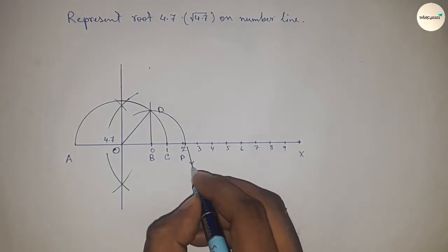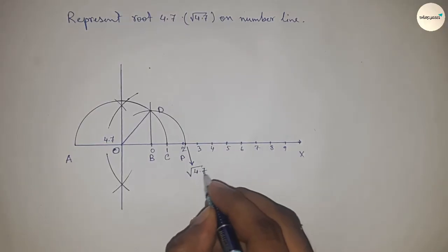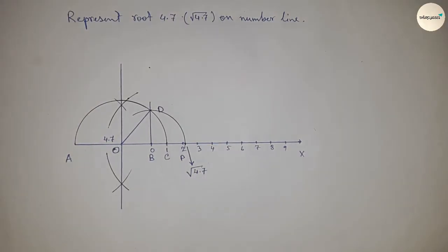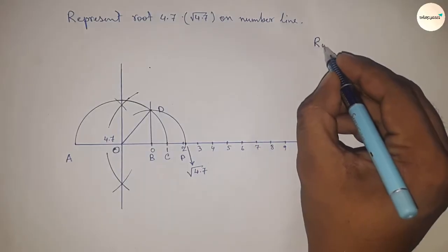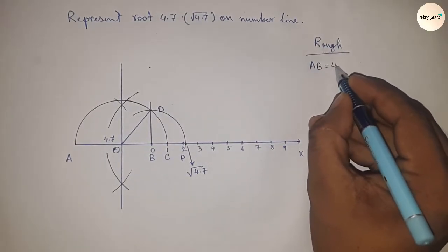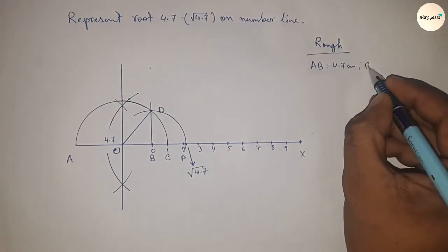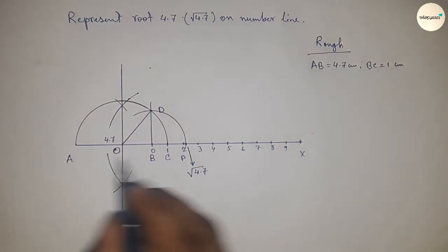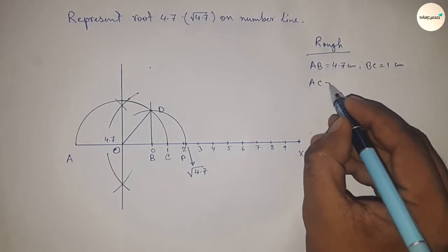Now let's discuss the calculation. Given: AB equals 4.7 centimeters and BC equals 1 centimeter, so AC equals 4.7 plus 1, which is 5.7 centimeters.